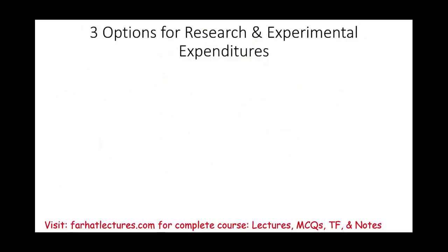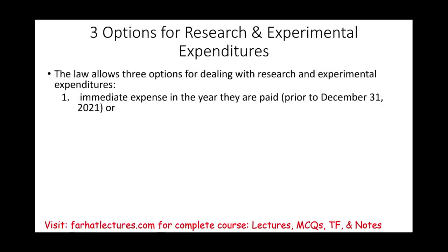There are three options for how to account for research and experimental expenditure. The first is to immediately expense in the year you pay or incur the expense — that was available prior to December 31st, 2021. The reason I'm mentioning this is because when you immediately expense those costs, this is similar to GAAP. But this option is no longer available. Simply put, if for tax purposes you expense it, and for GAAP you also expense research and development costs, you have no differences to account for on Schedule M1, no deferred tax asset, no deferred tax liabilities.